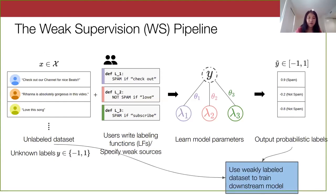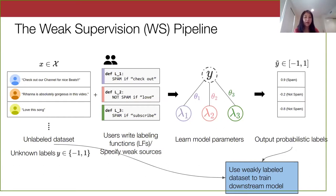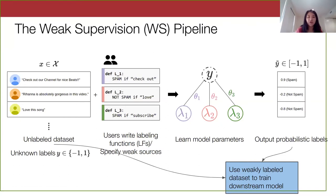Finally, we use this learned model to output probabilistic labels — a score between negative one and one — and we threshold them to get automatic labels on our dataset. For this work, we're mainly focused on evaluating the quality of the weak supervision pipeline from the unlabeled dataset step to the probabilistic label step. Typically after getting these labels, you construct your weakly labeled dataset and train your downstream machine learning model.